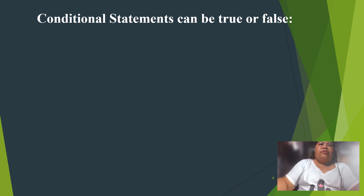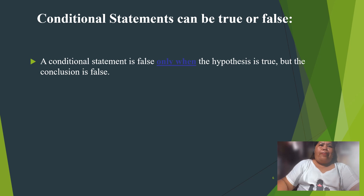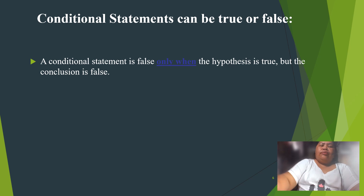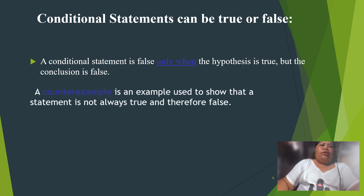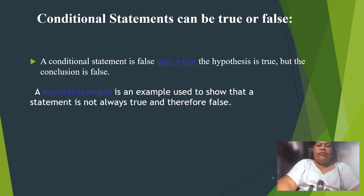Conditional statements can be true or false. A conditional statement is false only when the hypothesis is true but the conclusion is false. A counter example is an example used to show that a statement is not always true, and therefore false.